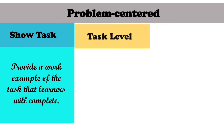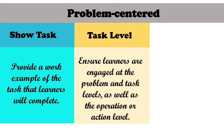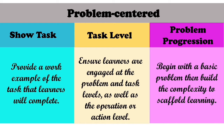There are three phases of problem-centered learning. First, ensure tasks provide a worked example of the tasks that learners will complete. In the task level, ensure learners are engaged at the problem and task levels, as well as the operation or action level. While in the problem progression, begin with a basic problem then build the complexity to scaffold learning.